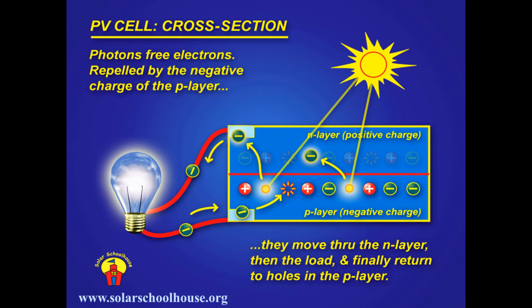Now we can see what happens when sunlight hits the solar cell. Photons of sunlight free electrons in the bottom layer. The negative charge of the P layer propels these electrons upward through the N layer. They flow through any load connected to the photovoltaic cell, and finally return to the P layer.